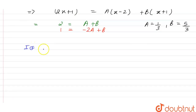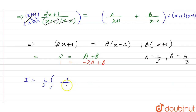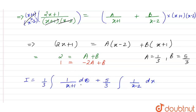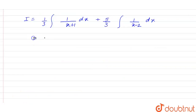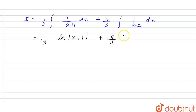So I from here will be equal to the integral of A times (1/(x+1)) plus B times (1/(x-2)) with respect to dx. That is (1/3) times the integral of 1/(x+1) dx plus (5/3) times the integral of 1/(x-2) dx, which gives (1/3) ln|x+1| + (5/3) ln|x-2|.